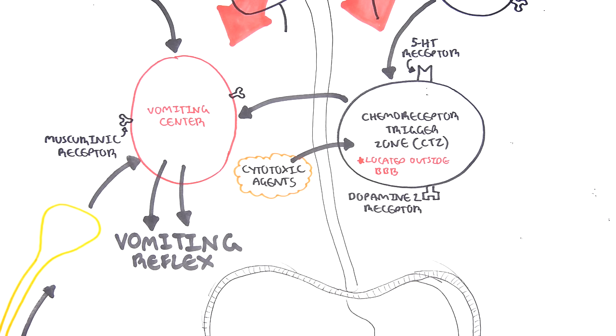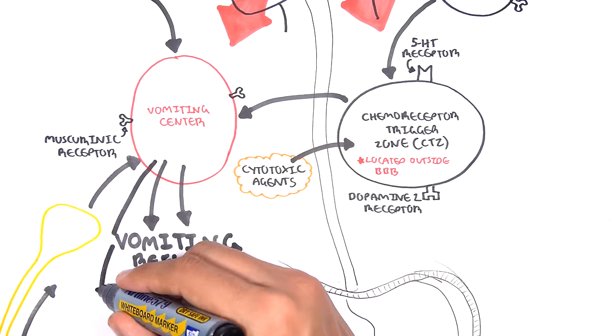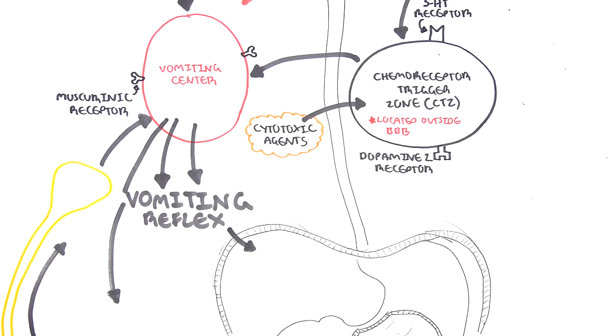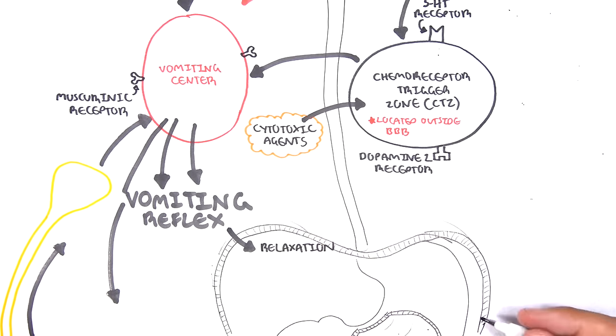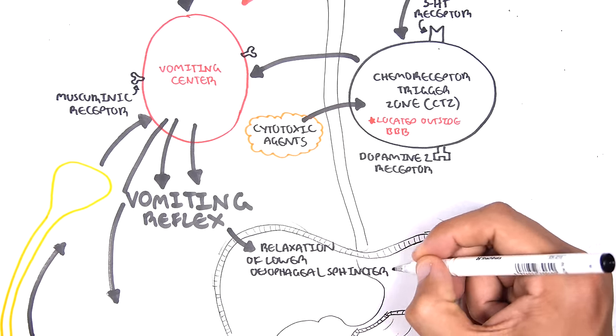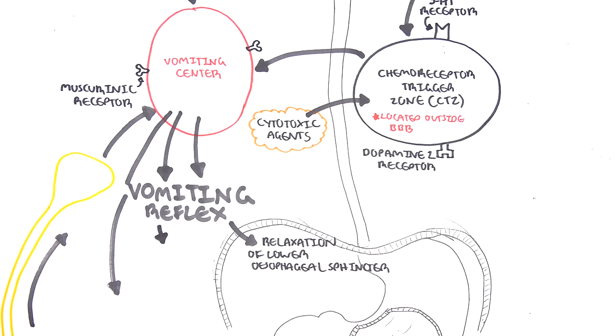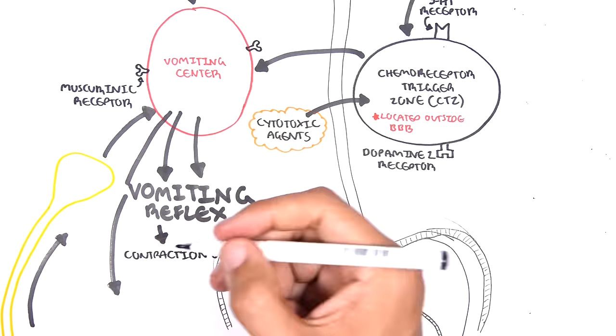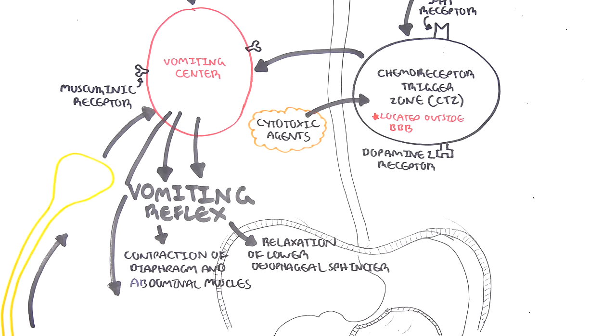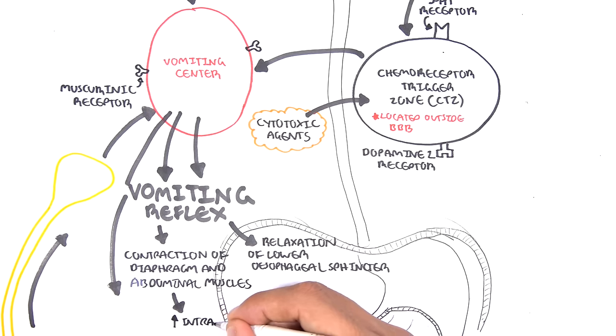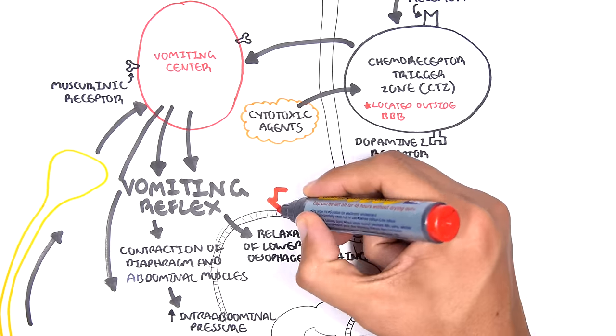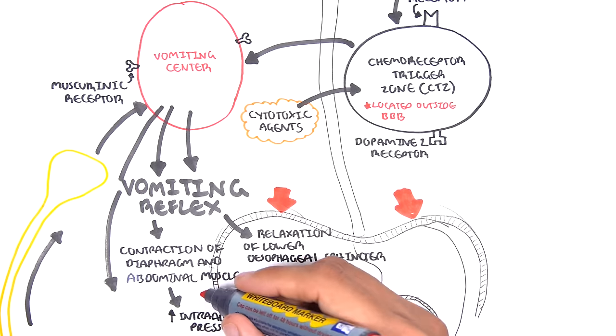Let's focus on what the vomiting reflex is and what actually happens during the process. First, it causes the lower esophageal sphincter to relax, which makes sense because we need food to come up towards the mouth when we vomit. We also need the diaphragm to contract and the abdominal muscles to contract, so that it will help push the food back up. This happens because we are increasing intra-abdominal pressure when we contract our muscles.